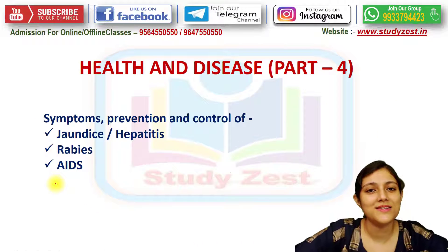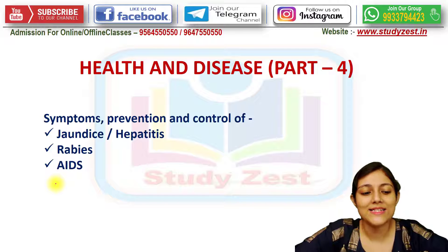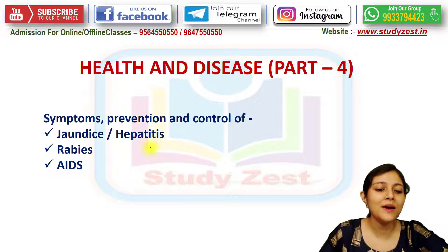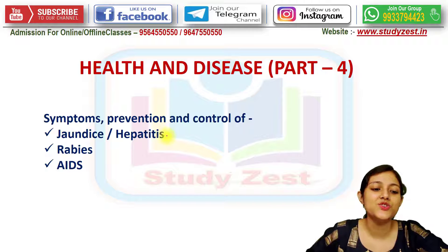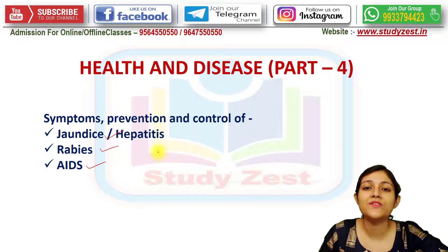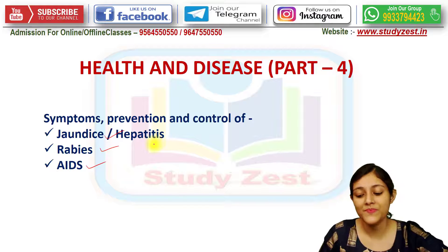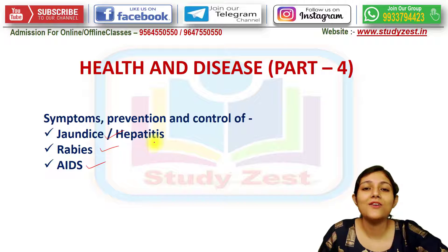Hello students, welcome to the biology class of Study Gist. Today we will continue with the chapter Health and Disease. In this class, the topics which will be discussed are three diseases: jaundice or hepatitis, rabies, and AIDS. We will discuss the symptoms of those diseases, what are the preventions, and how we can control these three diseases.